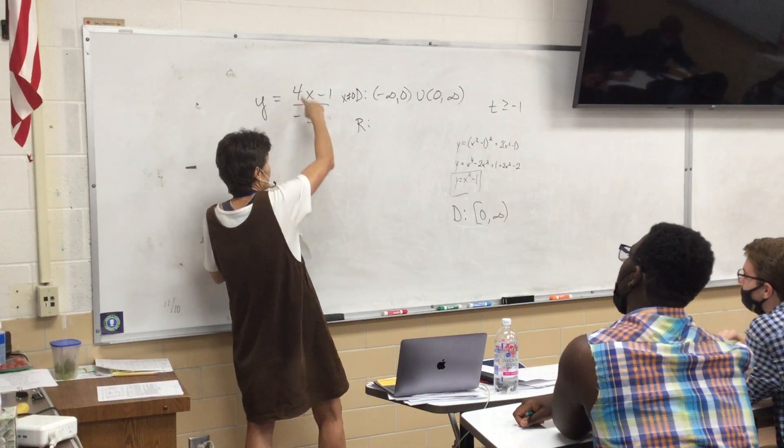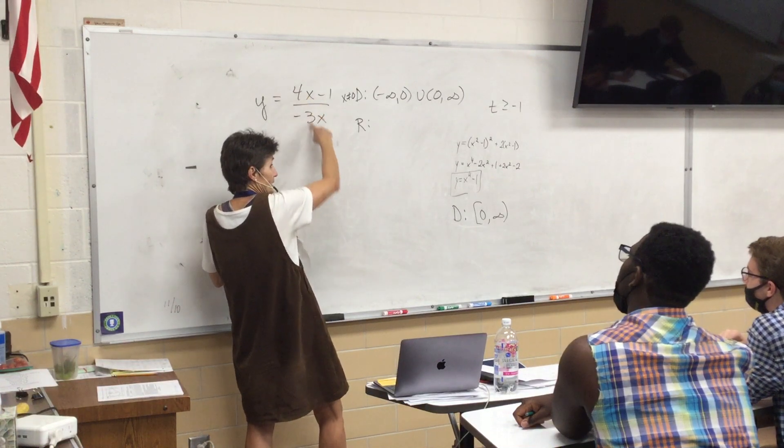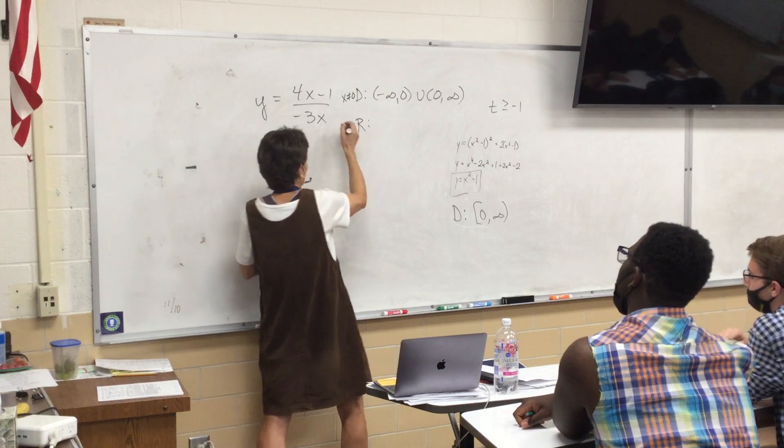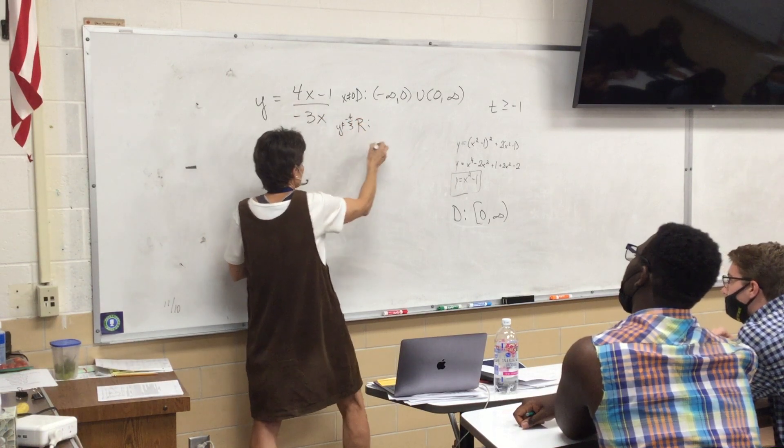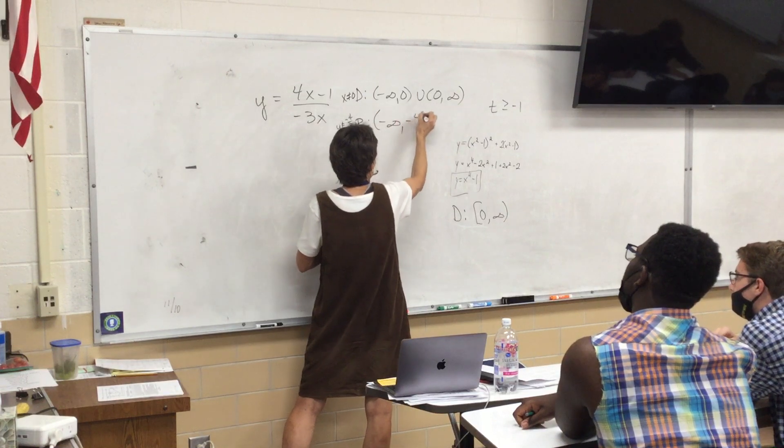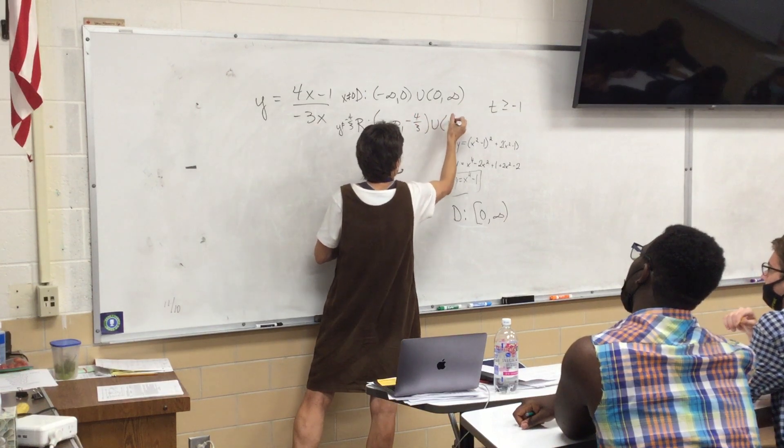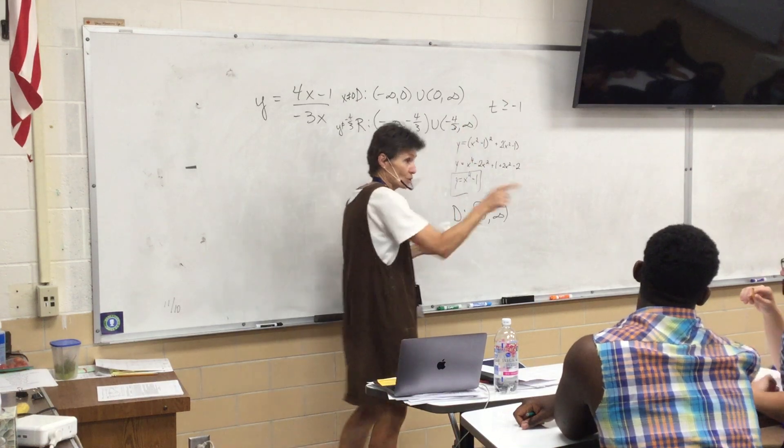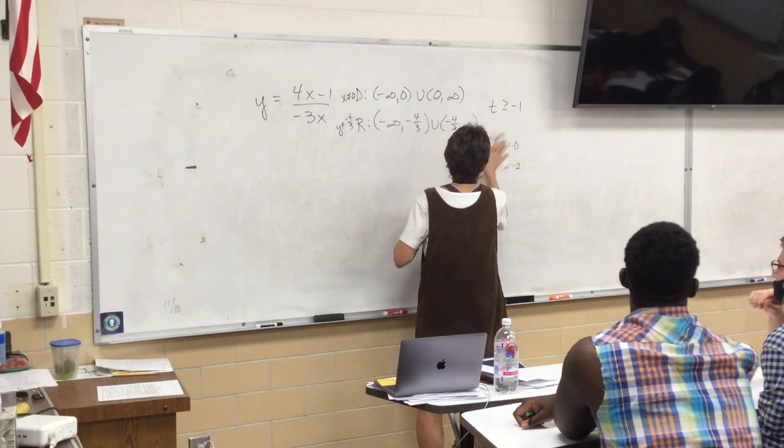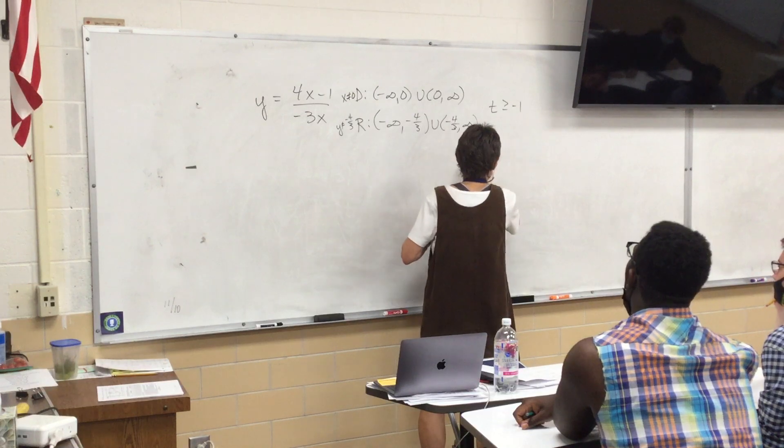Okay, what about the range? No, no, no. Be careful. We have a horizontal asymptote there, don't we? So, basically, Y can't be negative 4 thirds. So, that's my range of my original.